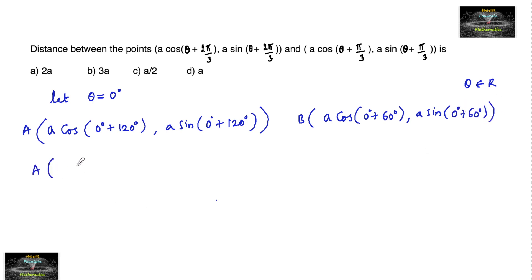Point A: a cos(120°) can be written as cos(90° + 30°), and a sin(90° + 30°). Point B: a cos(60°) is a/2, and sin(60°) is √3a/2.